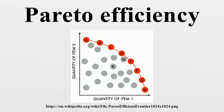Pareto efficiency is a minimal notion of efficiency and does not necessarily result in a socially desirable distribution of resources. It makes no statement about equality or the overall well-being of a society. The notion of Pareto efficiency can also be applied to the selection of alternatives in engineering and similar fields, where each option is assessed under multiple criteria and a subset of options is identified such that no other option can categorically outperform any of its members.